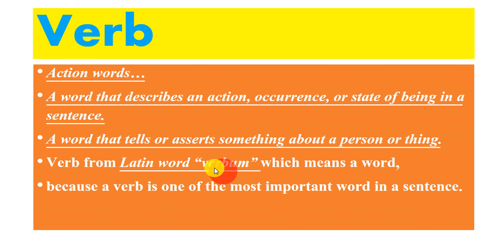A verb usually tells us three things: what a person or thing does, what a person or thing is, and what is done to him. For example, John goes to school — that tells us what John does. The kid is a cute creature — that tells us what the kid is. The glass was broken — that tells us what happened to the glass.